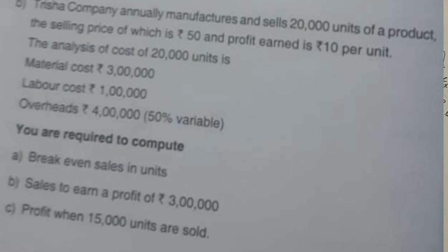Threshaw company annually manufactures and sells 20,000 units of a product, the selling price of which is 50 rupees and profit earned is 10 rupees per unit. The analysis of cost for 20,000 units is as follows: material cost 3 lakhs, labour cost 1 lakh, overhead cost is 4 lakhs, 50% variable. You are required to compute break-even point in units, sales to earn a profit of 3 lakhs, and profit when 15,000 units are sold.